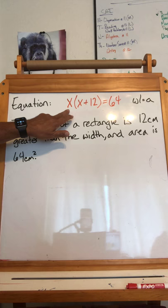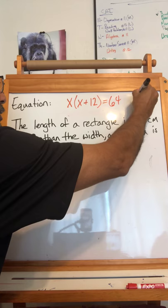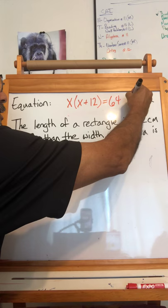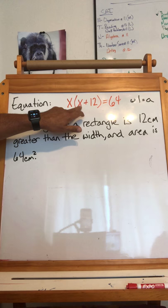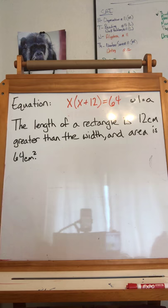So here's our width, x, or I'm sorry, length. Same thing, just let me put the letters right. Our length, no, I was right the first time. Oh man, this could be another one. Width is x, our length is width plus 12, so x plus 12 equals 64. Width times length equals area, okay?